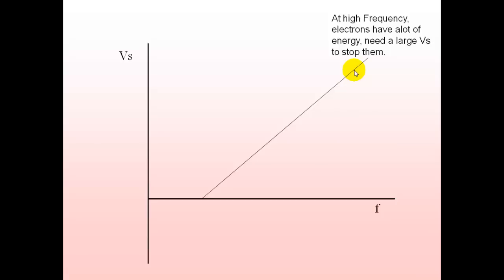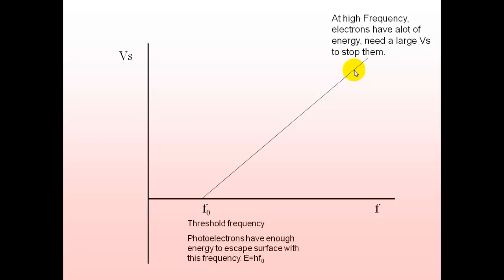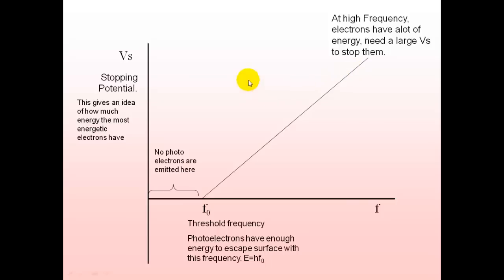F₀ is the threshold frequency, where photoelectrons have just enough energy to escape the surface but no more, so the stopping voltage is little more than zero. Below this threshold, no photoelectrons are emitted because they don't have enough energy to overcome the work function.